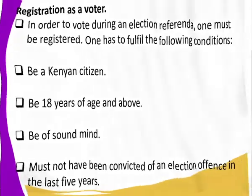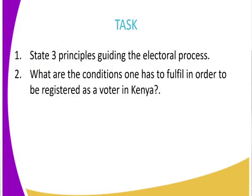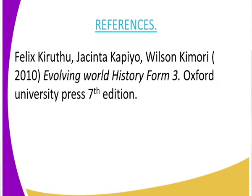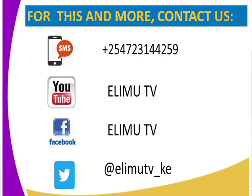For our assignment, study the principles guiding the electoral process and name the conditions one has to fulfill in order to be registered as a voter in Kenya. For more reference, refer to Evolve World History and Government, Oxford University Press, seventh edition — the latest edition that includes the 2010 constitution. For more lessons, get in touch with us at Elimu TV, your favorite learning channel.